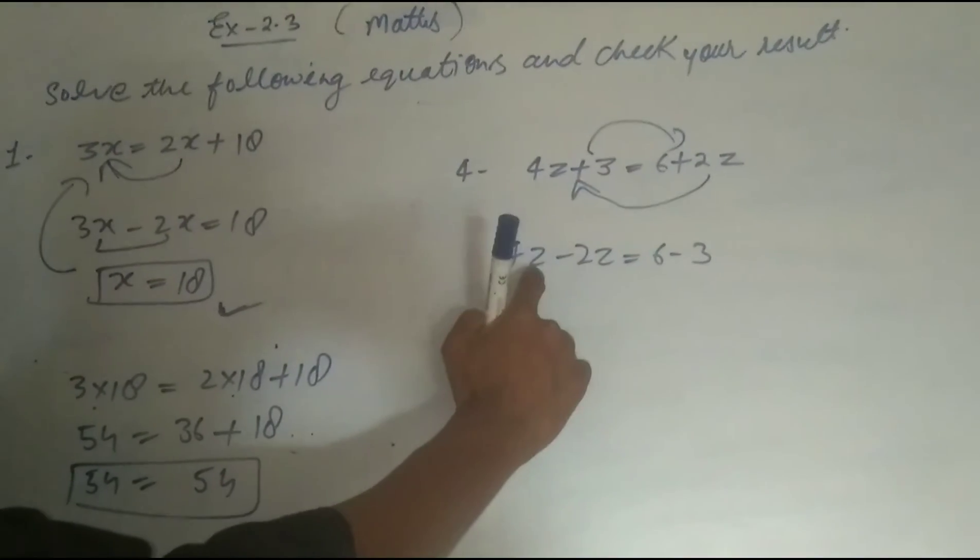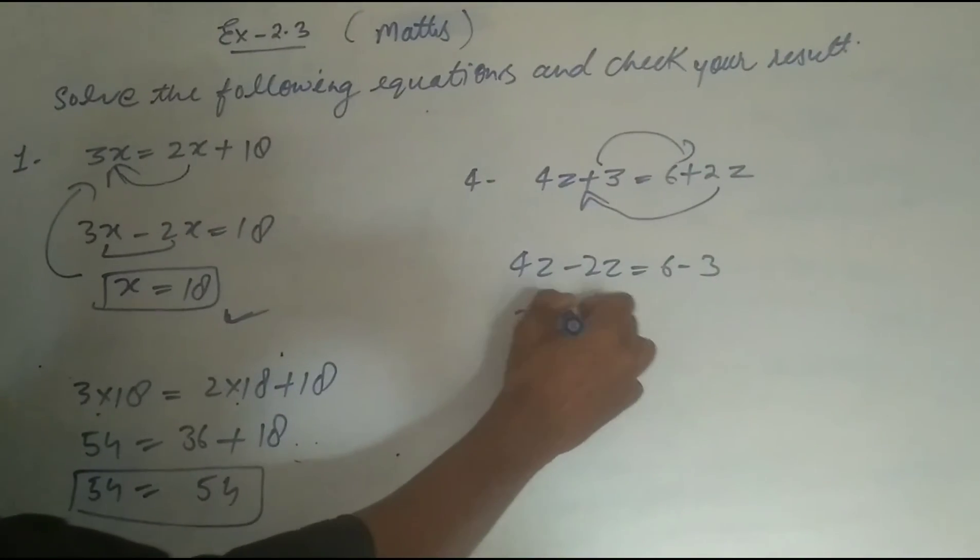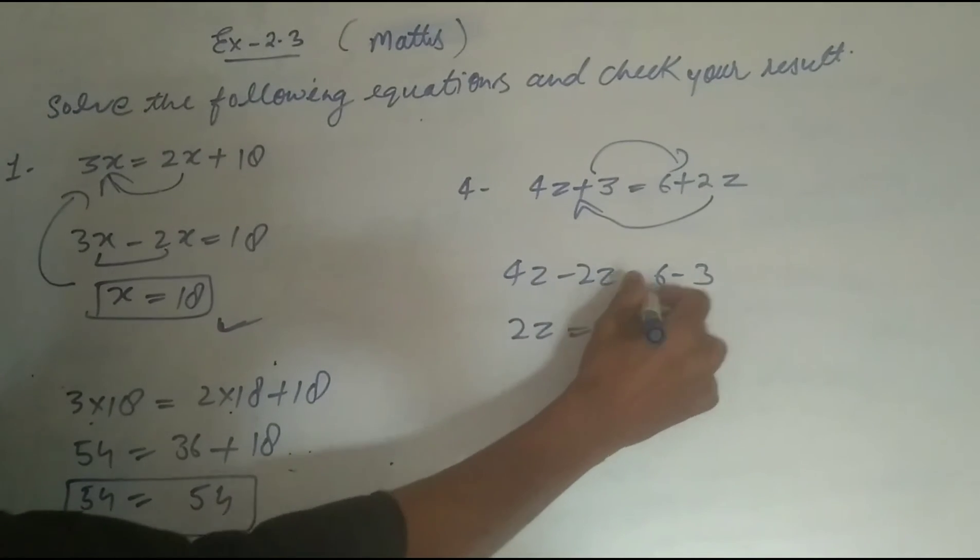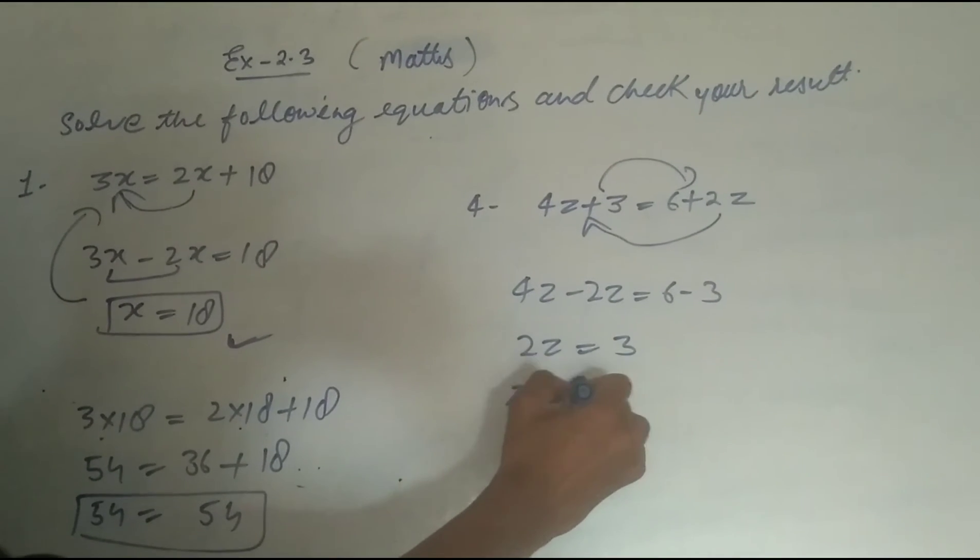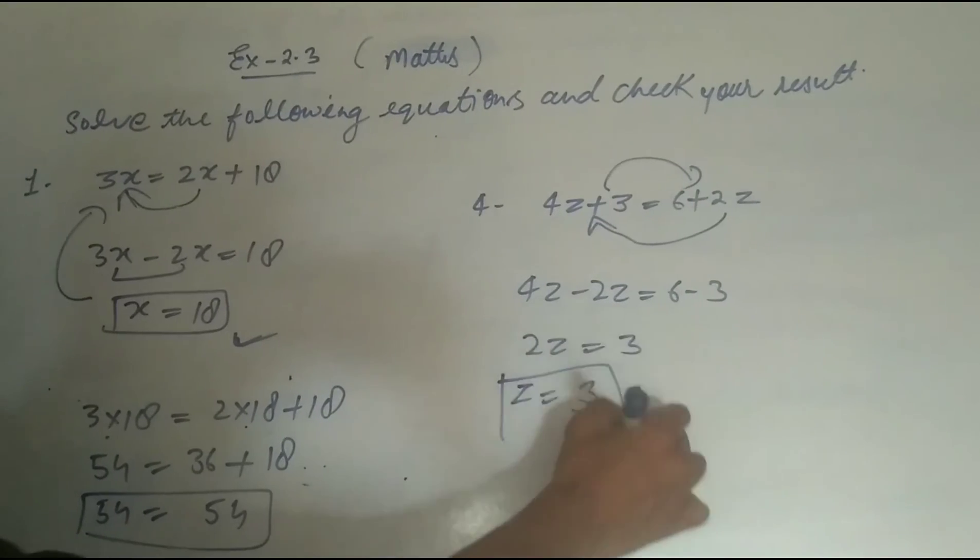4z minus 2z is 2z, both are like terms. 2z and 6 - 3 is 3. The value of z = 3/2. This is the result.